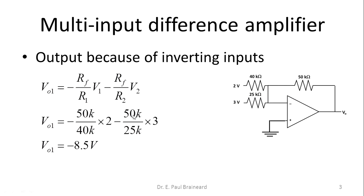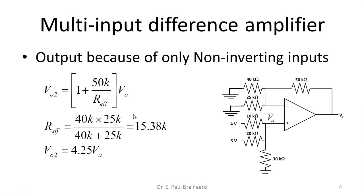Now let us find out the output because of non-inverting inputs. Whenever you are finding the output voltage because of non-inverting inputs, you have to obviously ground the other voltage sources that are given to the inverting input terminal.